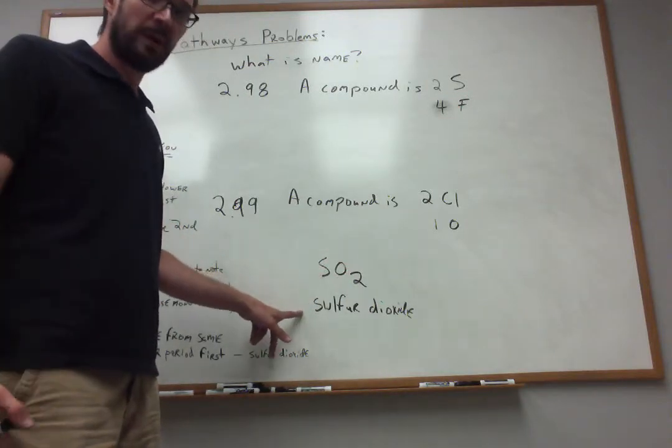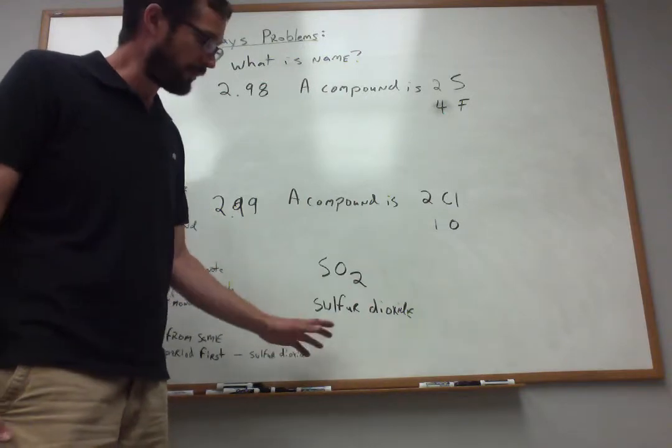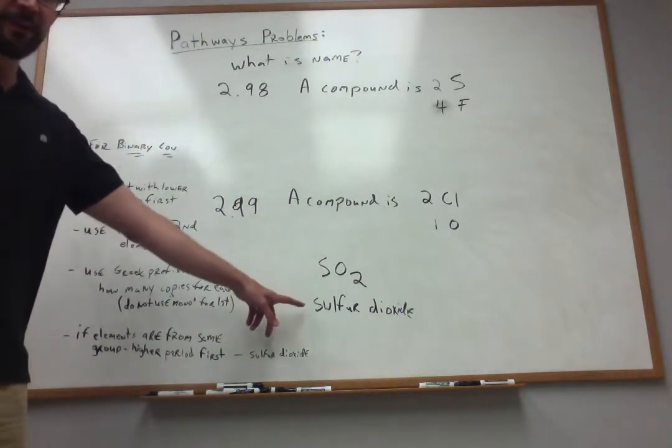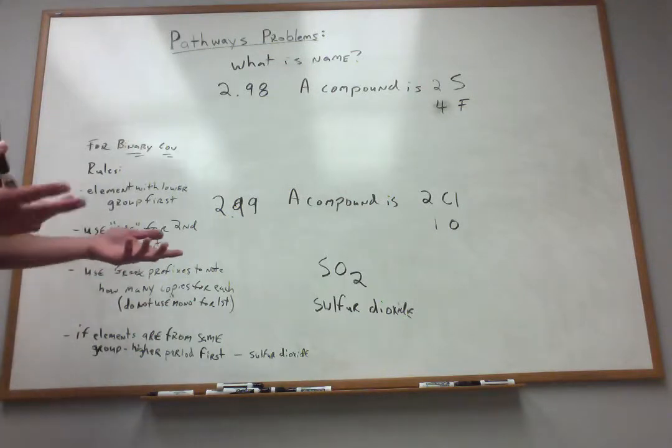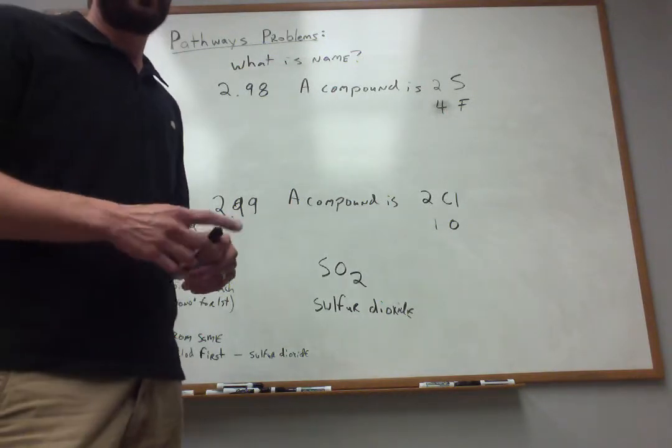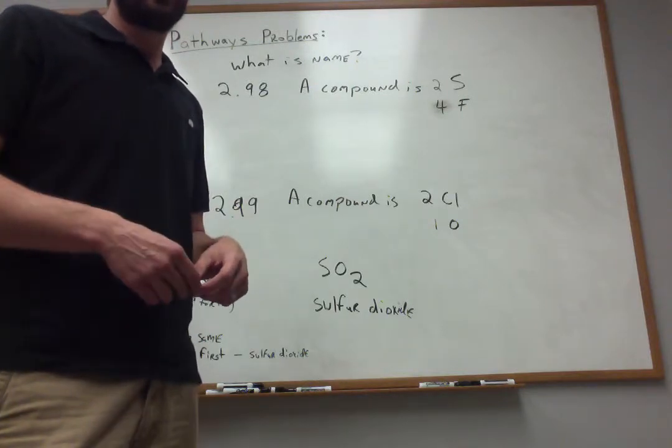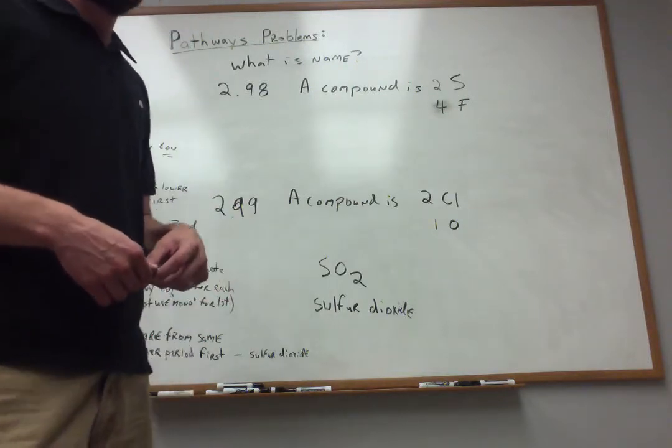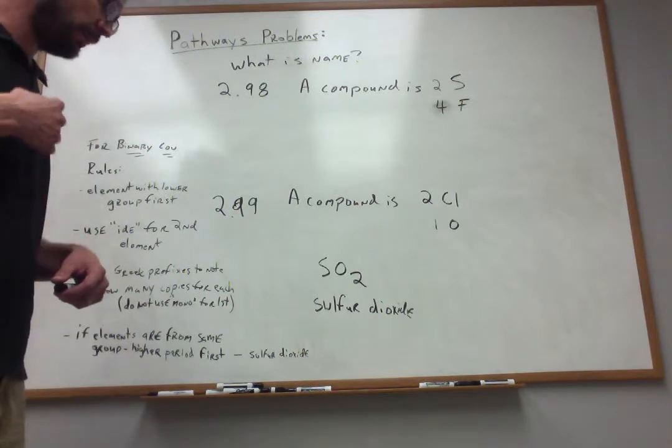Now, you say, well, why isn't there a mono for monosulfur dioxide, right? It's sulfur dioxide. Well, for the first element, we usually do not use mono. We do for the second element like carbon monoxide, for instance. CO is carbon monoxide, but CO2 is carbon dioxide. So we only use that mono for the second element all the time.